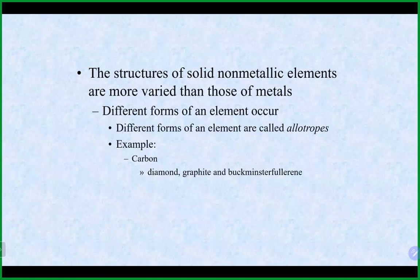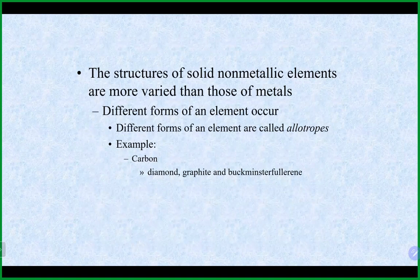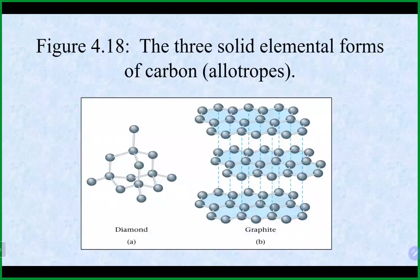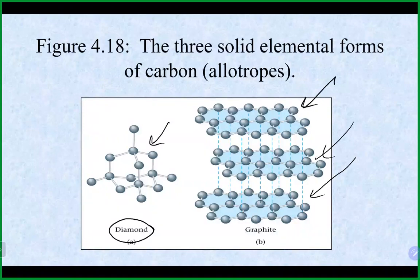Different forms of the same nonmetallic element are called allotropes. Carbon is an example — there are several different forms: diamond, graphite, and fullerene. In diamond, carbons are arranged in one pattern; in graphite, they're arranged in sheets. They're ultimately both carbon, just different arrangements, which is why they have different properties — and very different price points.